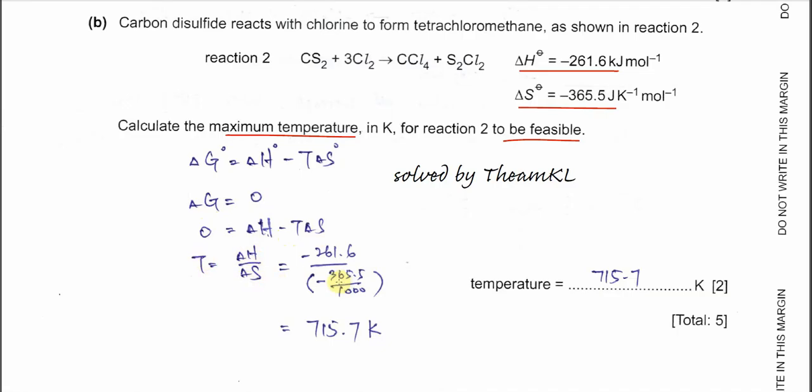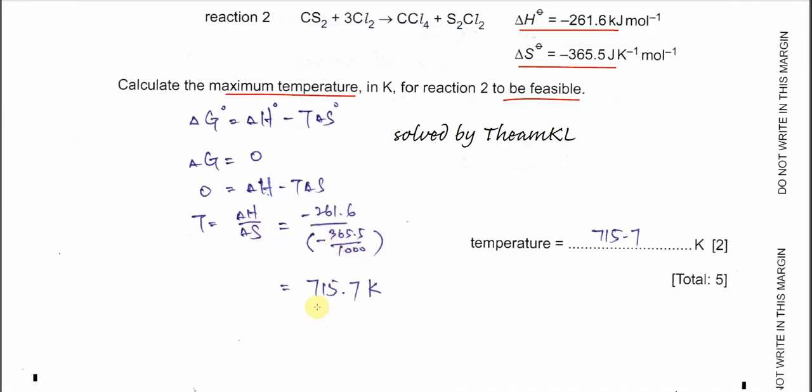Make sure to convert joules to kilojoules by dividing ΔS by 1000. You get 715.7 Kelvin. This is the maximum temperature for the reaction to be feasible. Whenever they ask for temperature to be feasible, make this assumption and get the correct T.